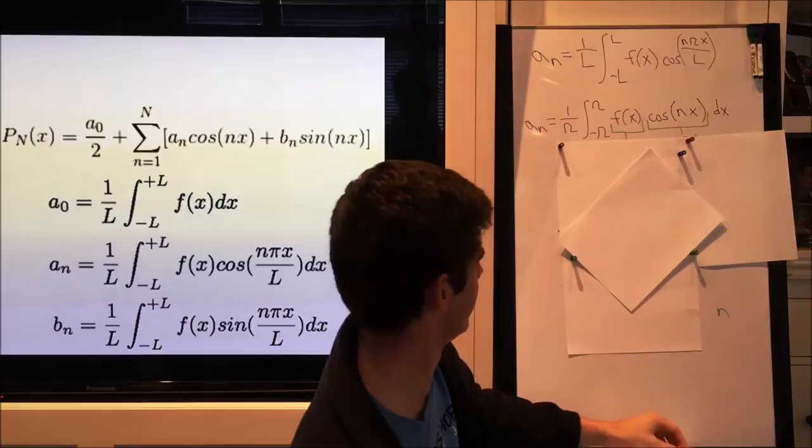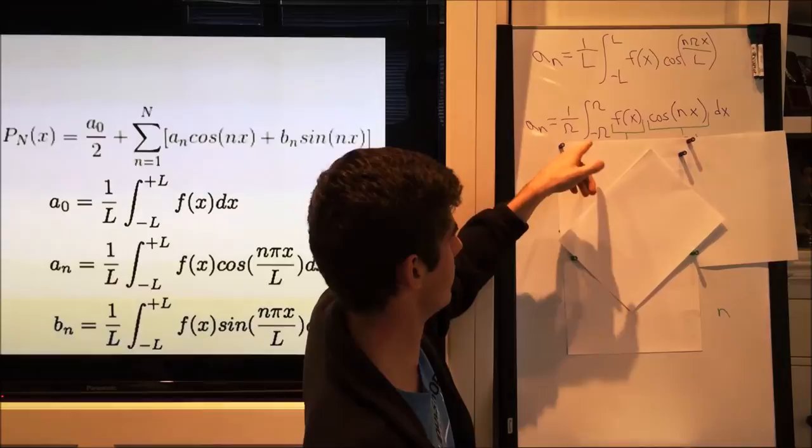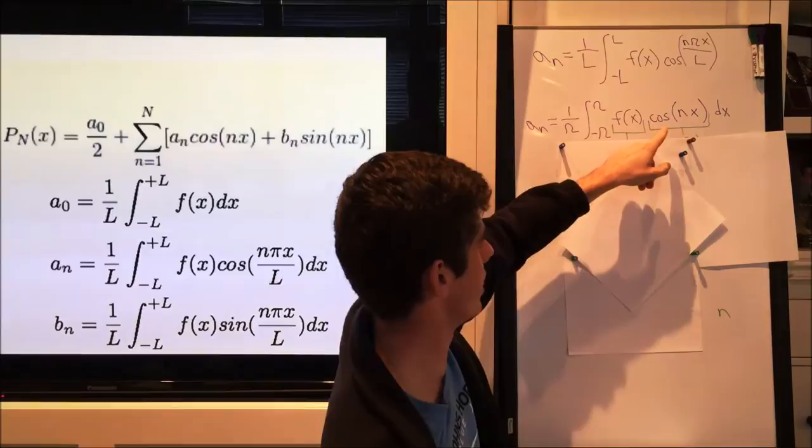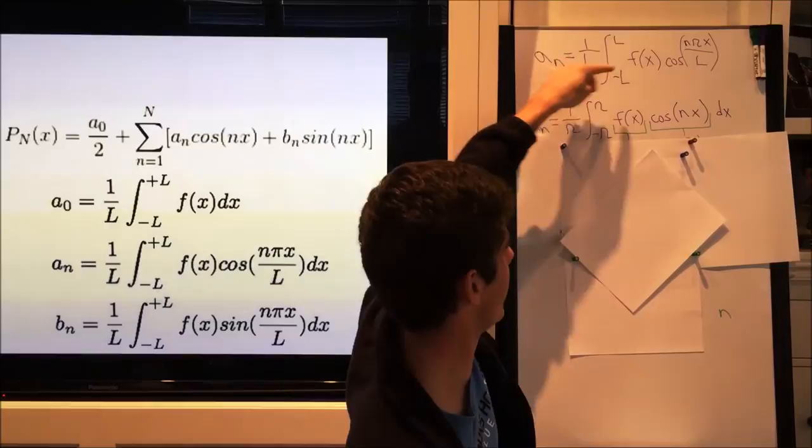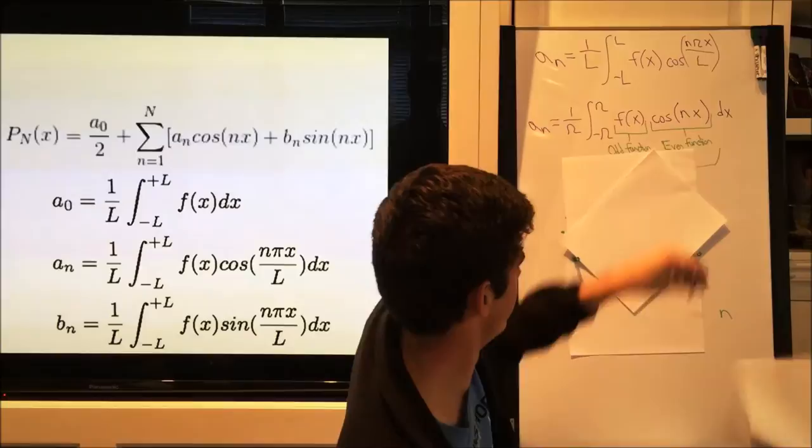As you can see here, that would mean that a_n equals 1 over π from negative π to π of the function f at x, which equals x, times cosine n times x, because the period is π.